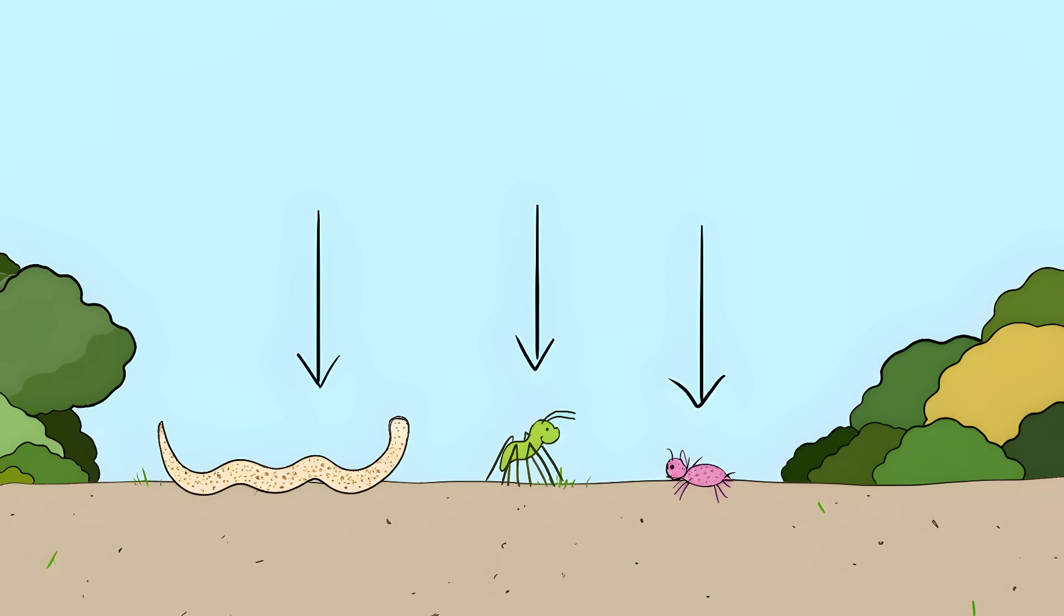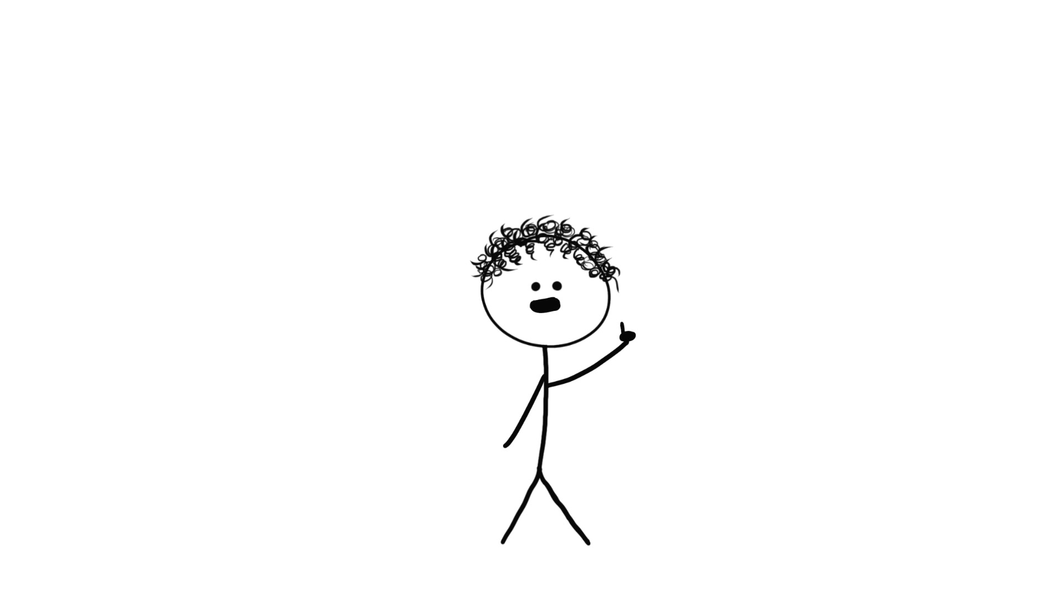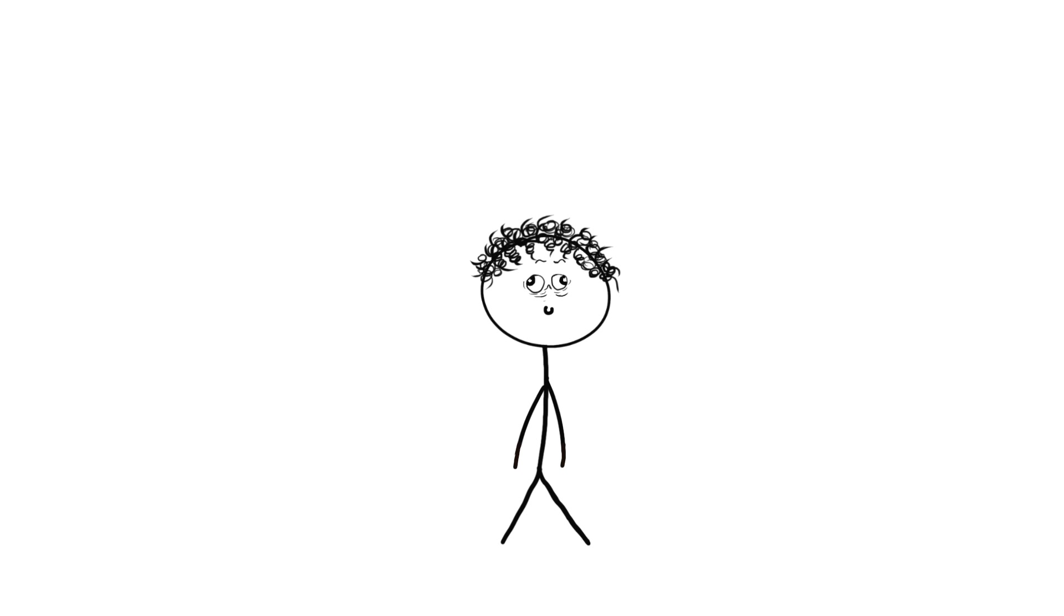Right now, these worms can only control insects, but parasites are constantly evolving, jumping between species. Scientists have found other parasites that already affect human behavior. All it would take is one mutation, one evolutionary leap, and instead of insects drowning themselves, we'd have people walking into the ocean. Nature's already shown us the blueprint for mind control. It's happening right now, getting more sophisticated with each generation.